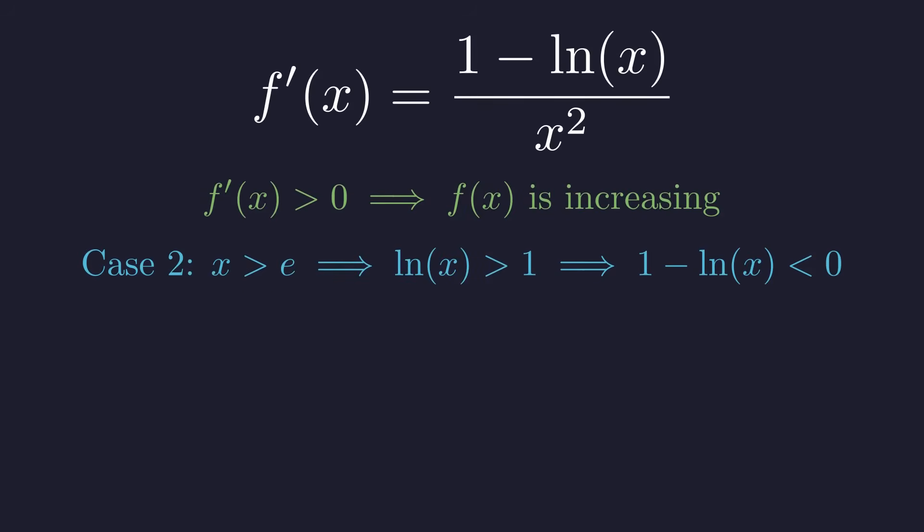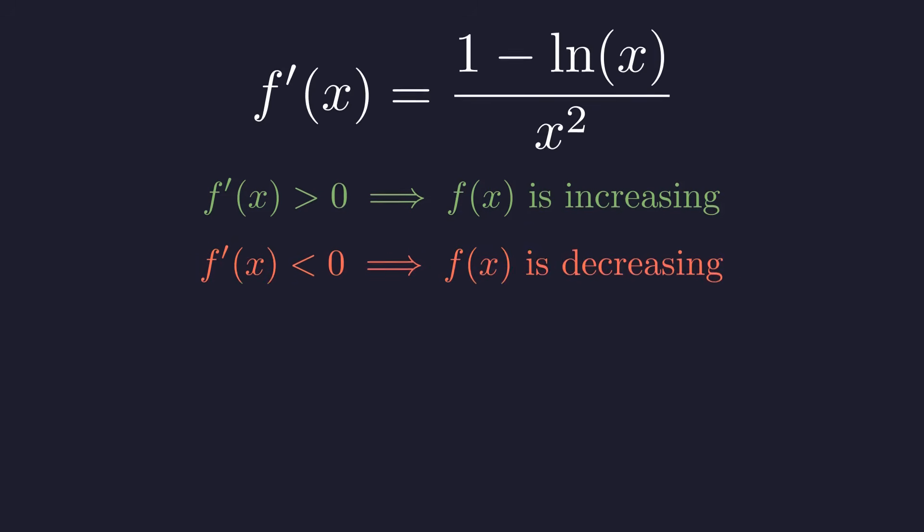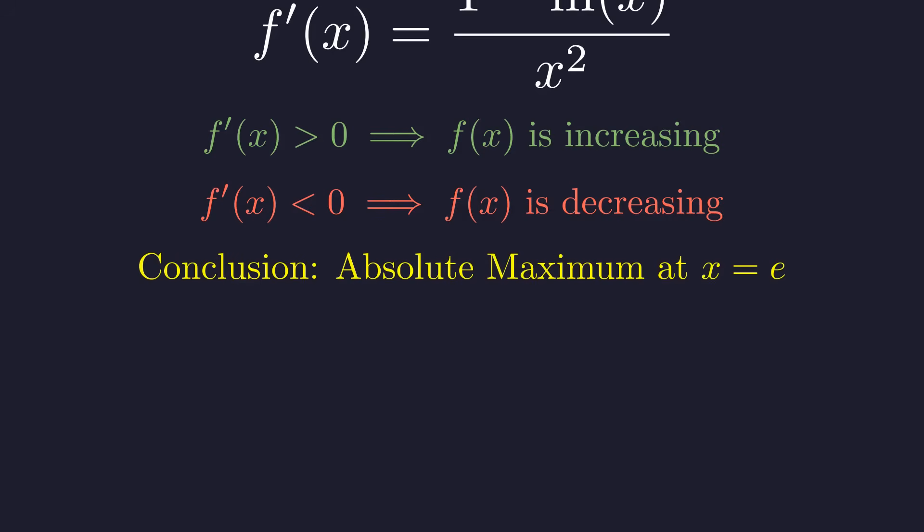But when x is greater than e, the natural log of x exceeds 1, making 1 minus that quantity negative. A negative derivative means the function is falling as we move past e to the right. So the function climbs up to e, then falls away afterward. This confirms that f of x reaches its absolute maximum precisely at x equals e.